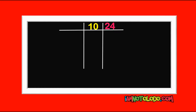2 can divide 10 and 24, so we start with 2. 2 in 10 is 5, 2 in 24 is 12. 2 can still divide 12, so we can still use it. 2 cannot go into 5, so write down your 5. 2 in 12 is 6. 2 can still divide 6, so we can still use 2. Write down your 5.